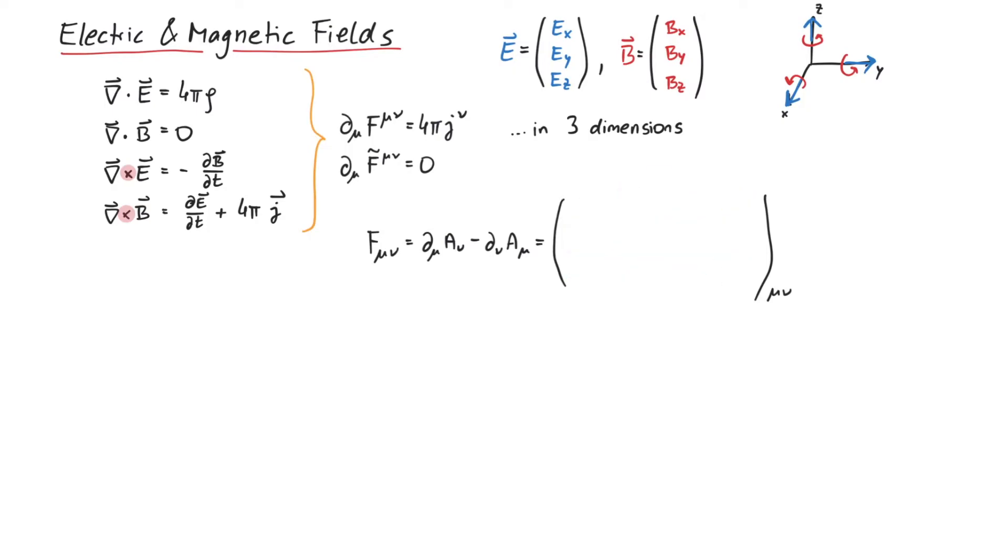Now we can imagine higher dimensions. For D spatial and one time dimension, we have D plus one times D plus one entries in the field strength tensor. Regardless of which dimension we are considering, it has still to be an anti-symmetric tensor.